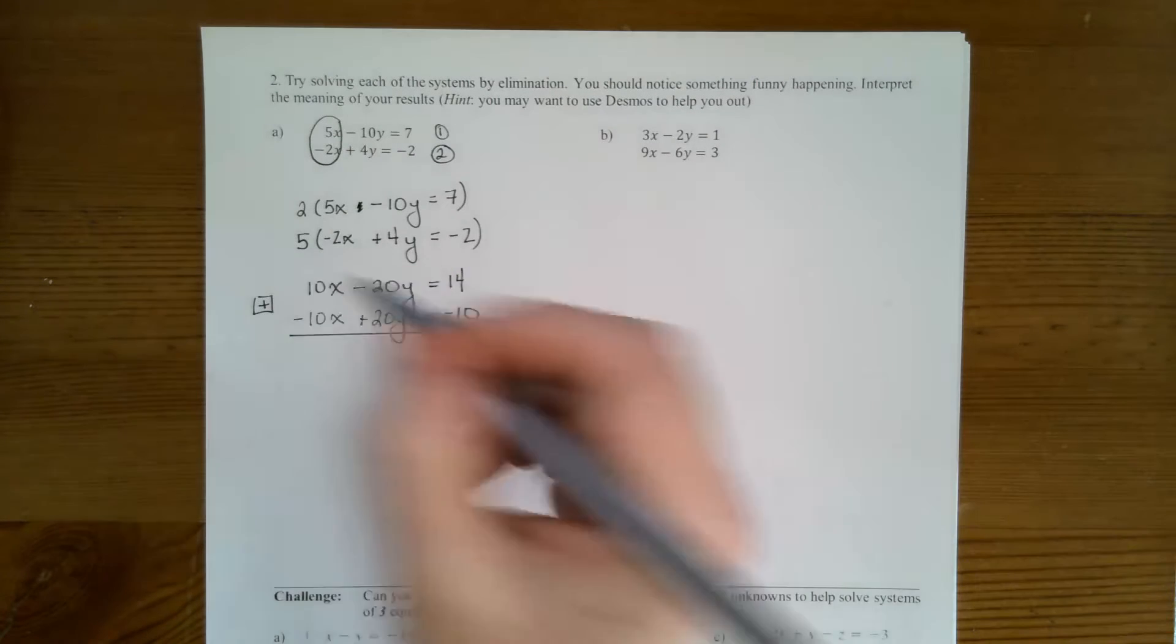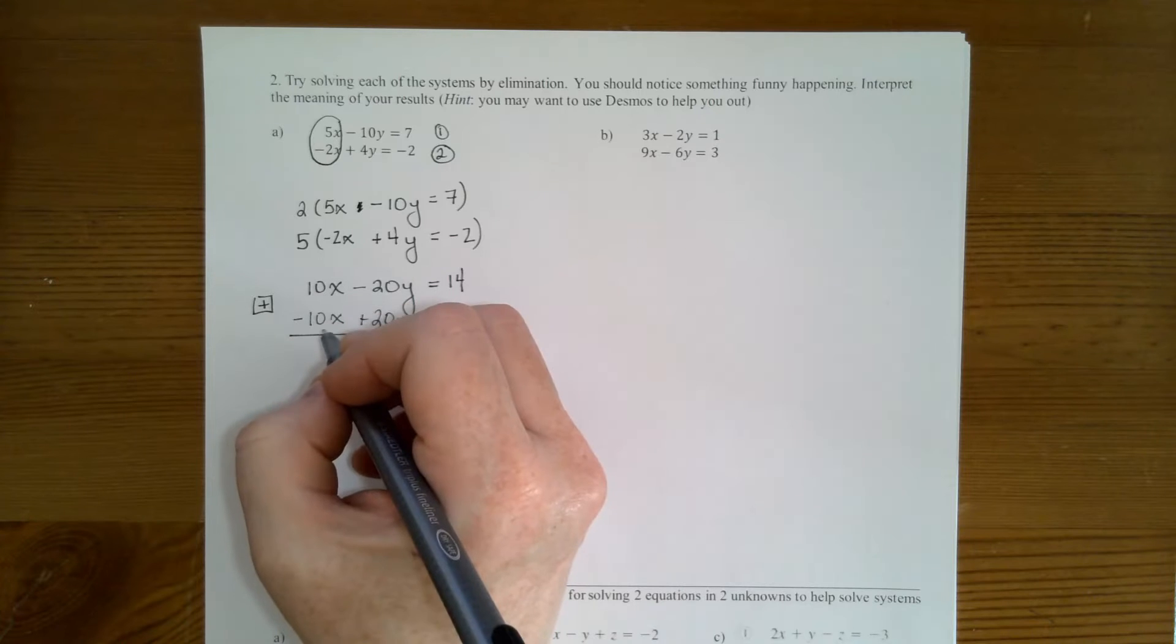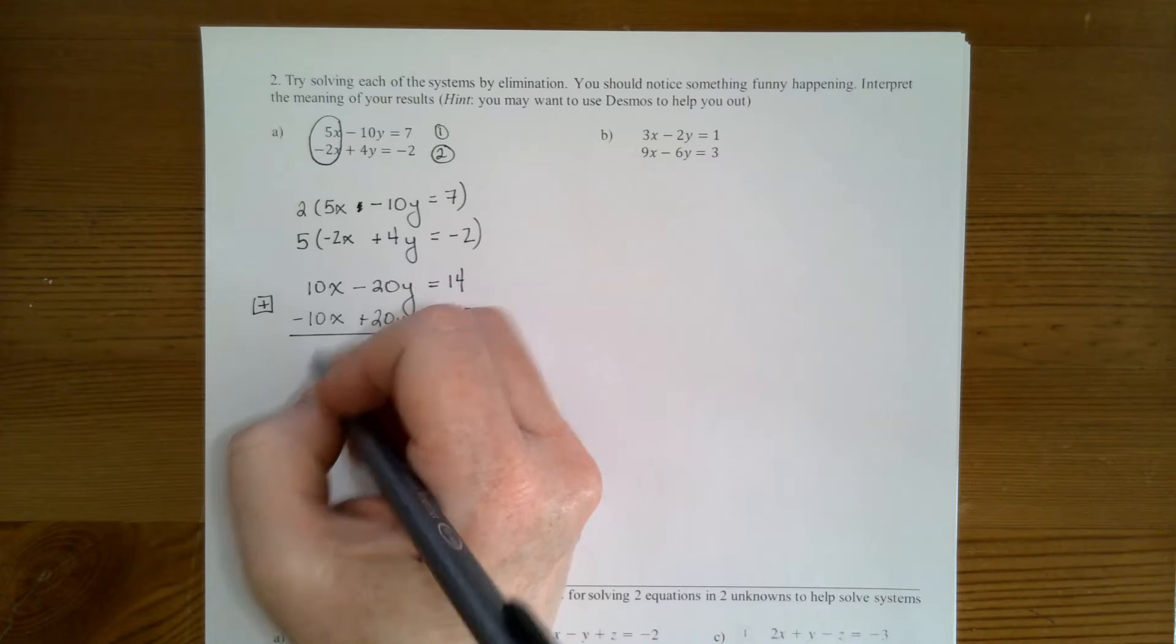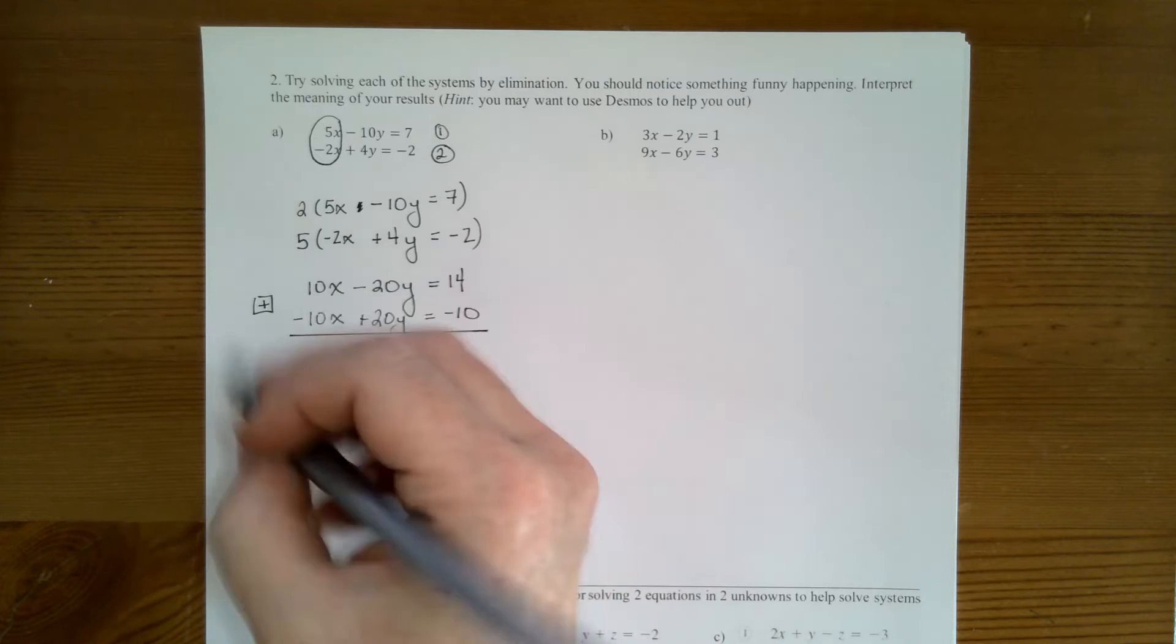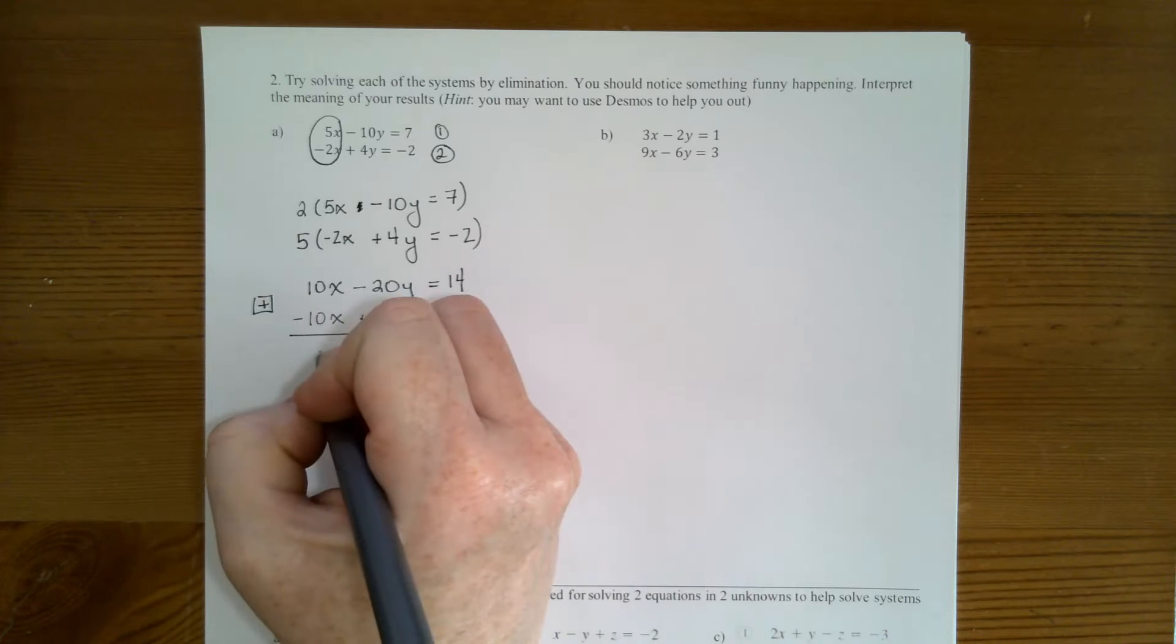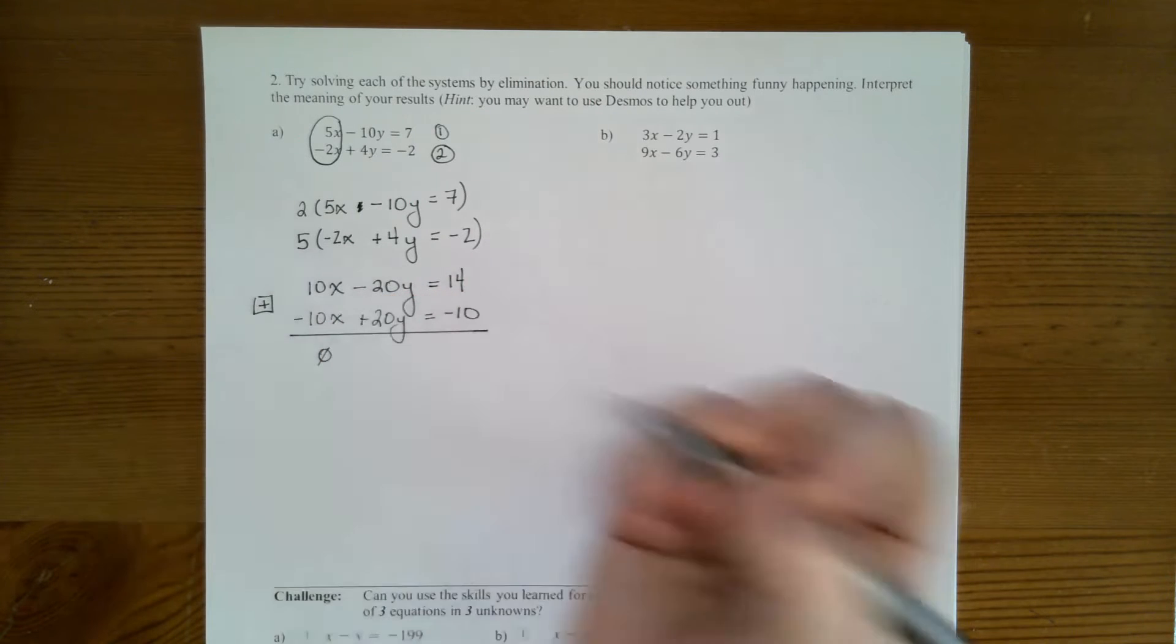So here I go. I add these together. I get 0x's. So that's eliminated. I normally wouldn't write it, but I'm just going to write that 0 here because I don't have anything.